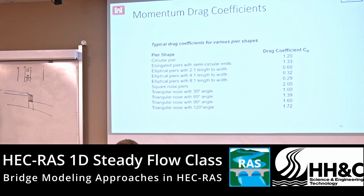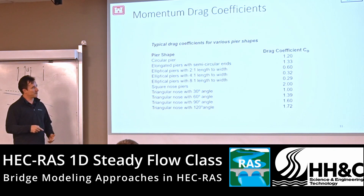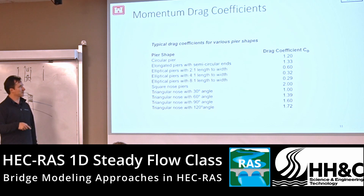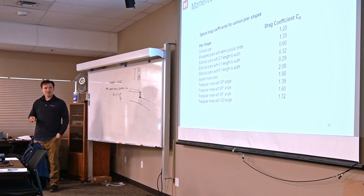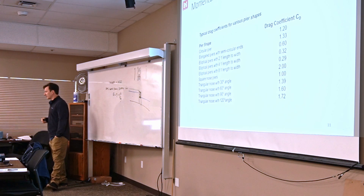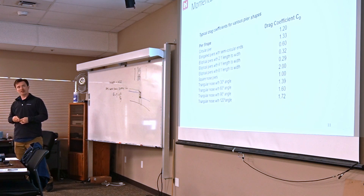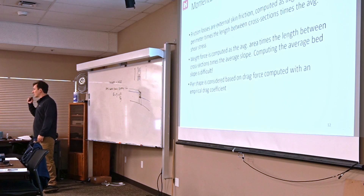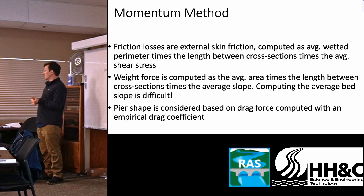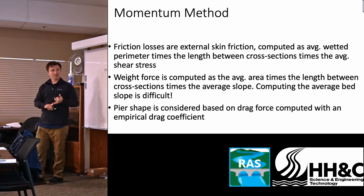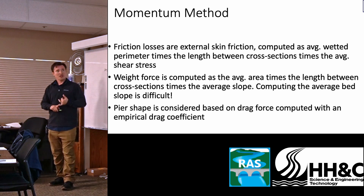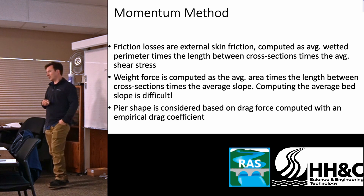The drag coefficient in the momentum equation is related to pier shape. There are tables in the user manual for different pier types — circular piers, nose piers, and others — and values vary from about 0.3 to 1.62, showing significant variation. Some pier shapes are much more efficient than others. In the momentum equation, friction losses include skin friction through the wetted perimeter multiplied by the length between cross sections, the weight of water includes the pressure gradient term, and pier shape is included through the drag coefficient.